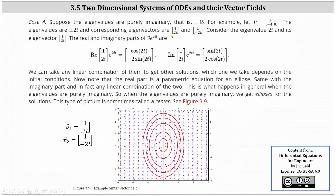Case four: suppose the eigenvalues are purely imaginary, that is plus or minus iB. For example, if we have the two by two matrix with entries 0, 1, -4, and 0, the eigenvalues are plus or minus 2i, and the corresponding eigenvectors are the vectors (1, 2i) and (1, -2i). Consider the eigenvalue 2i and its corresponding eigenvector (1, 2i). The real and imaginary parts for the eigenvector V times e to the power of 2iT are shown below. We can take any linear combination of these to get other solutions, depending on initial conditions. Note that the real part is a parametric equation for an ellipse, and so is the imaginary part and any linear combination of the two. This is what happens in general when the eigenvalues are purely imaginary: we get ellipses for the solutions. This type of picture is sometimes called a center.